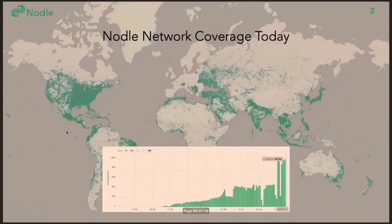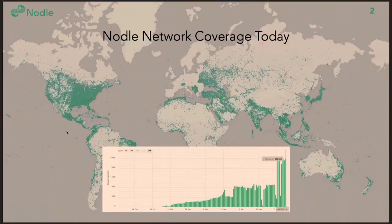Our network is global today, so we are basically everywhere and we are currently building on Stellar. By building on Stellar, we went over a million transactions a day on the network only with Nodal. Today we are extending our network with a new set of technologies and tools that we build on parity substrate, to remain compatibility with Stellar.